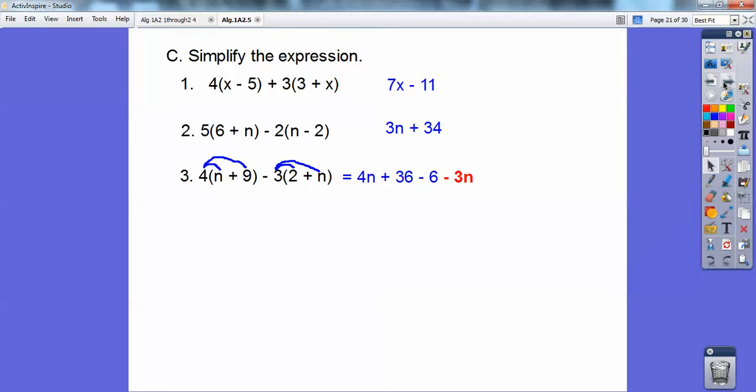And then I'm going to combine like terms. So 4n minus 3n is 1n. And then 36 minus 6 is plus 30. All right.